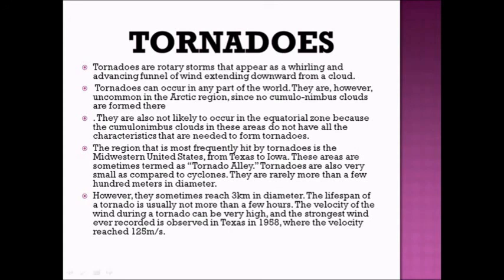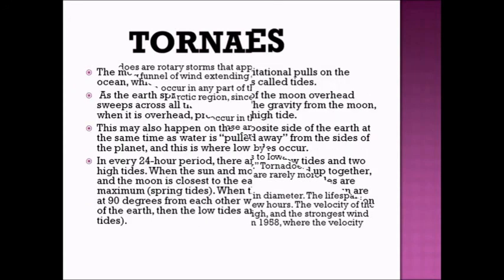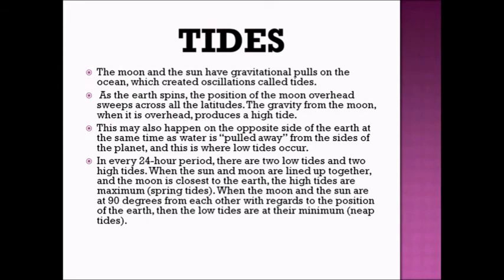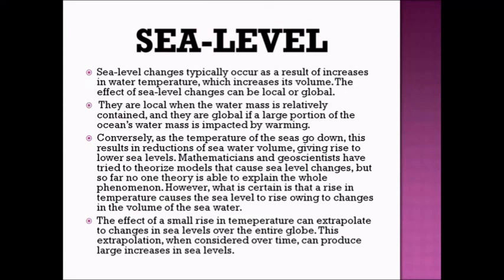Even without cyclones or typhoons, water levels can rise due to tides, because the moon and sun have gravitational pull on the ocean, creating oscillations called tides. Every 24 hours, we have two low tides and two high tides. When the sun and moon are lined up and the moon is closest to the earth, you have a high tide. When the moon and sun are at 90 degrees from each other relative to the earth, you have low tides.